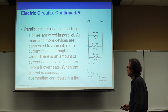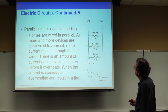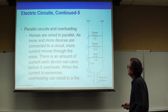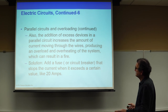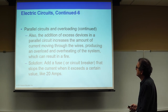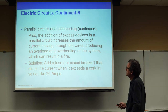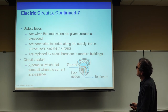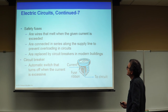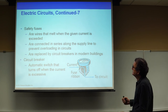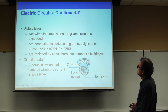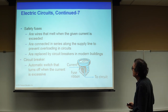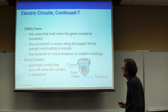When current is excessive, overheating can result in a fire, which is why we have safety fuses. Safety fuses are wires that melt when the rated current is exceeded, opening the circuit and preventing current from flowing — automatically opening a switch that shuts off all devices on the same circuit. They are connected in series along the supply line. In modern buildings, they are replaced by circuit breakers, which interrupt the current to stop overloading.